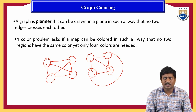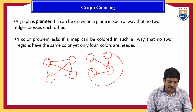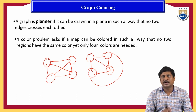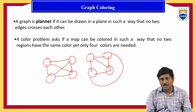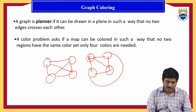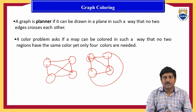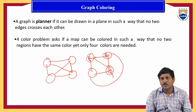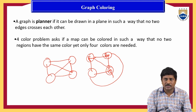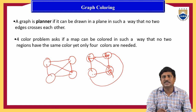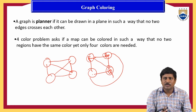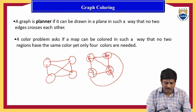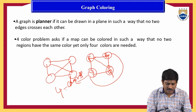The four color problem asks if a map can be colored such that no two regions have the same color, yet only four colors are needed. Looking at this graph, we fill one vertex with red. All three other vertices are adjacent to it, so we use blue, green, and yellow for them respectively. For this graph we need a minimum of four colors, so the chromatic number is four.